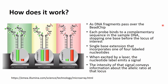How does it work? We take the DNA we want to genotype and these DNA fragments pass over the bead chip. Each probe binds to a complementary sequence in the DNA, stopping one base before the locus of interest. After that, single base extensions incorporate one of the four labeled nucleotides. These nucleotides are special because when excited by a laser they emit a specific signal, and the intensity of that signal conveys information about the genotype at that particular locus or bead.